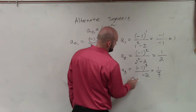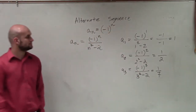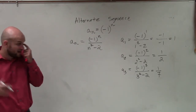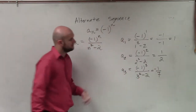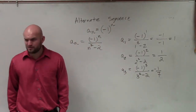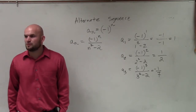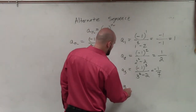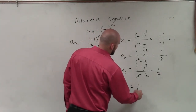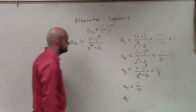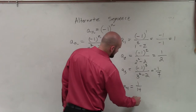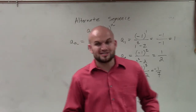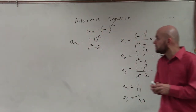Does everybody see what I'm doing? I'm just plugging in the number of the sequence. Does everybody understand? For a subscript 4, a student gets 14. And for a subscript 5, a student answers negative 23. Negative — right.